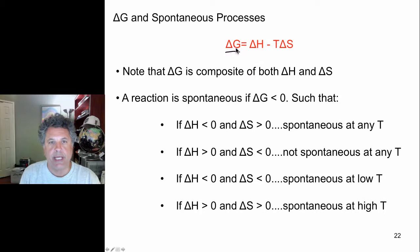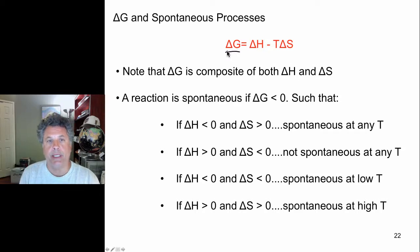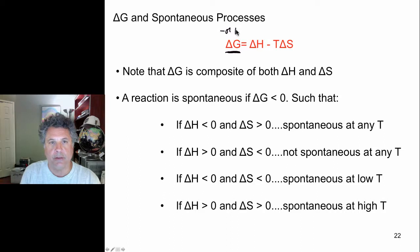If delta G is negative, we have a spontaneous process that releases energy. If delta G is positive, we have a non-spontaneous reaction and energy must be put in for it to occur. Whether delta G is negative or positive depends upon whether delta H and delta S are negative or positive.